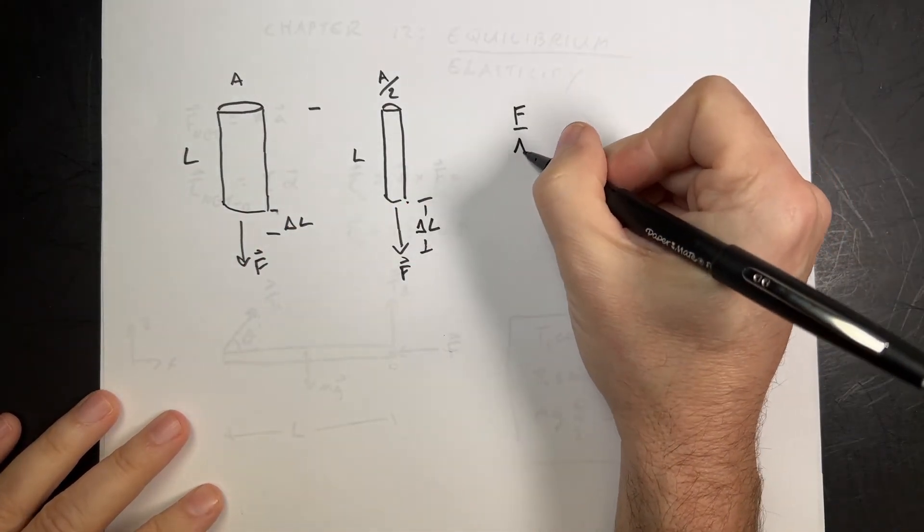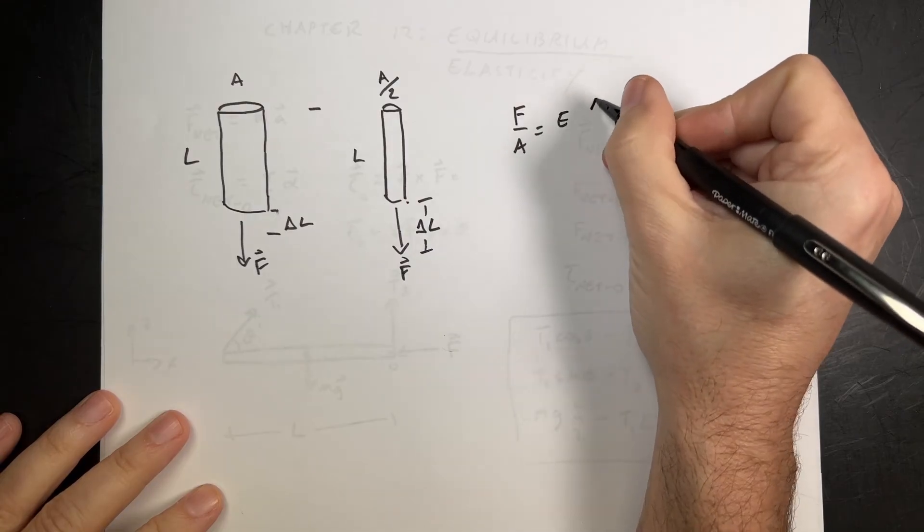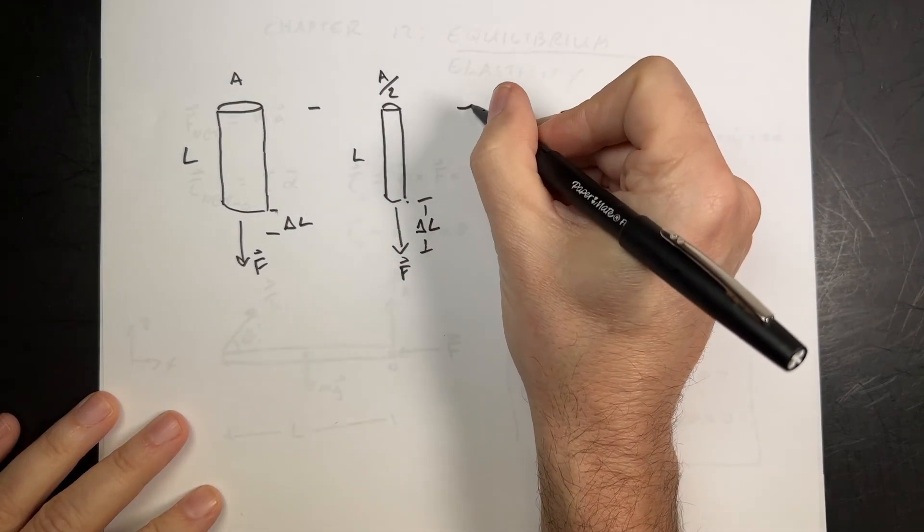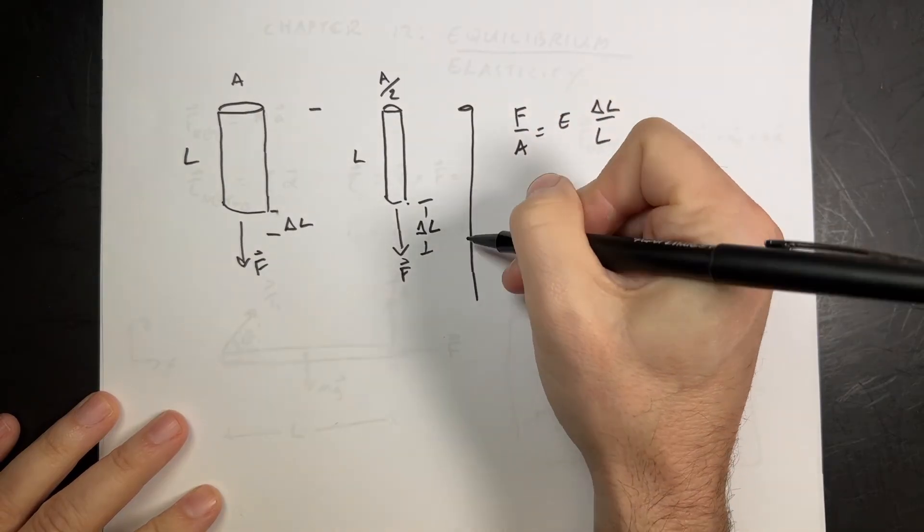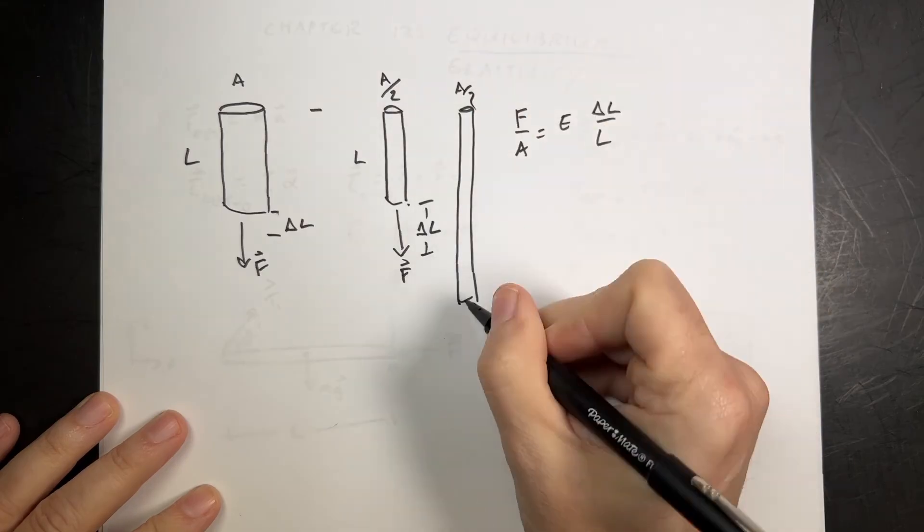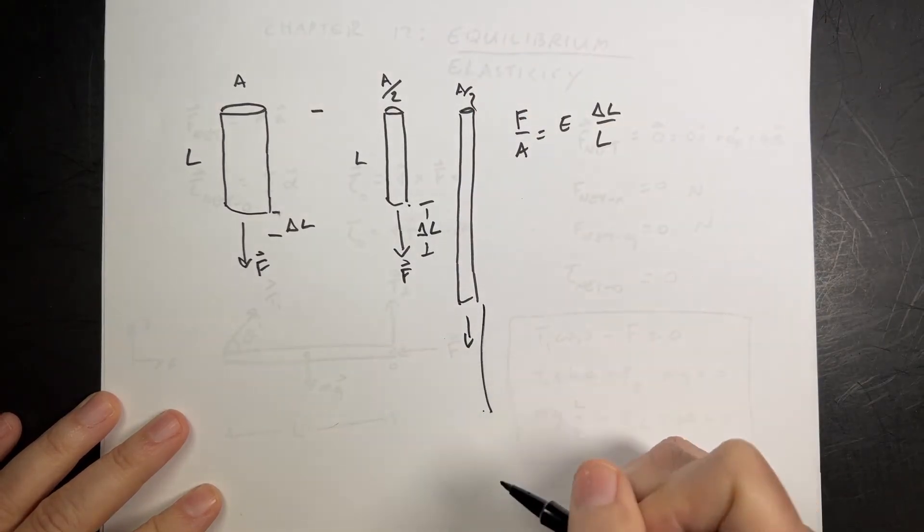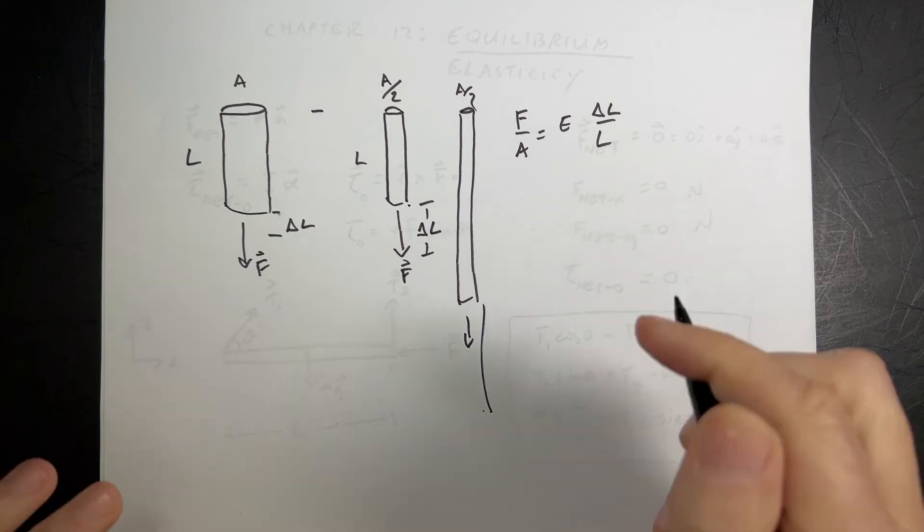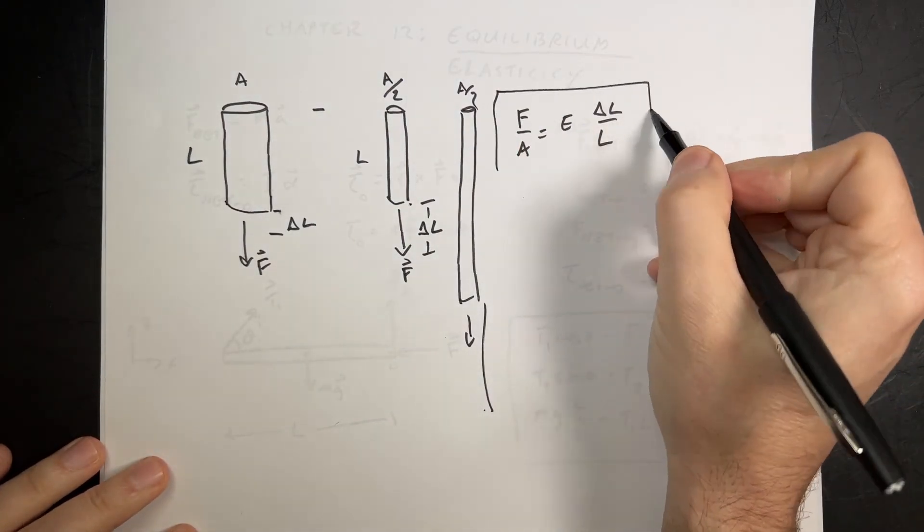They have F over A equals E delta L over L. Because I didn't include the other thing. What if I take this wire, and it's longer, but it has the same A over 2, and I pull in the same force. It's going to stretch even longer, too. So, longer wires stretch more than shorter wires. And that's exactly what this equation says.